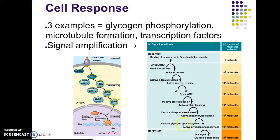The final protein in this example is glycogen phosphorylase, which uses an inorganic phosphate to release glucose monomers called glucose 1-phosphate. That whole activity is the act of actually breaking down glycogen. One thing to remember is that this pathway itself can be amplified.